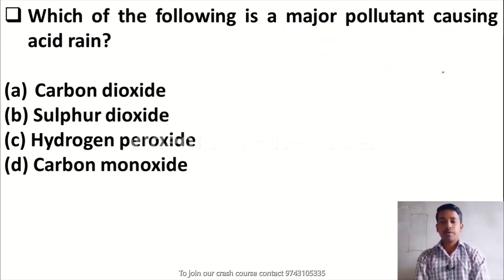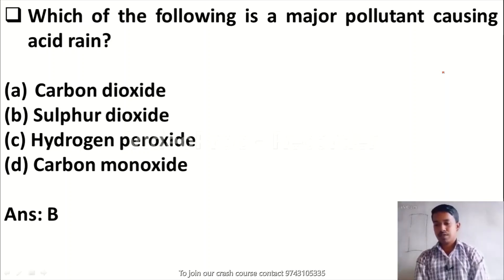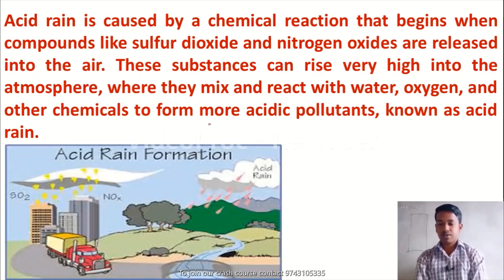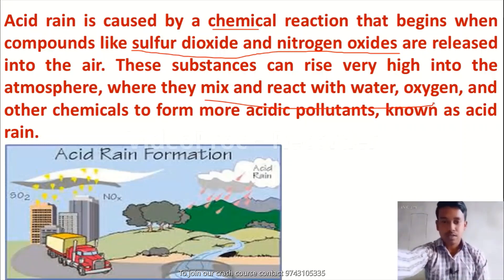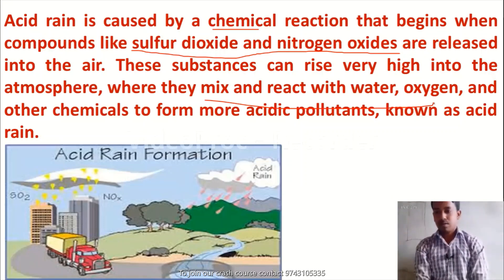Which of the following is a major pollutant causing acid rain? Option A, carbon dioxide; Option B, sulfur dioxide; Option C, hydrogen peroxide; Option D, carbon monoxide. The right answer is Option B — sulfur dioxide. Acid rain is caused by chemical reaction. It begins when compounds like sulfur dioxide and nitrogen oxides are released into the air. These substances rise high into the atmosphere where they mix and react with water, oxygen, and other chemicals to form more acidic pollutants known as acid rain.